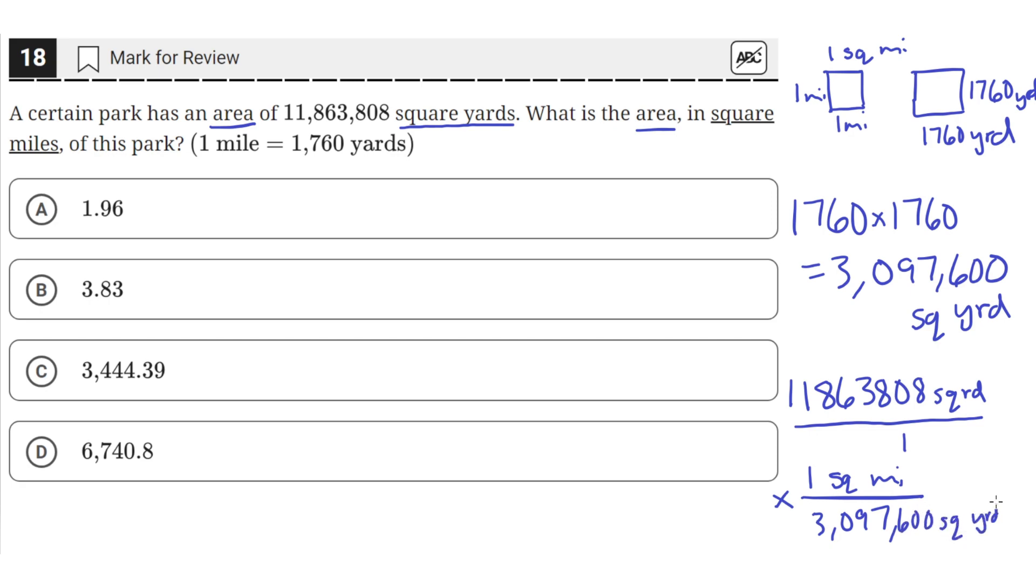then the square yards here will cancel out, and we'll be left with units of square miles. So when we divide 11,863,808 by the number of square yards in one mile,